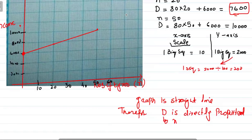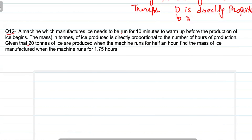Question 12: A machine manufacturer — ice needs to run for 10 minutes to warm up before production. The mass of ice is directly proportional to the number of hours of production. Given that 20 tons of ice are produced when the machine runs for half an hour, find the mass when the machine runs for 1.75 hours. First, we write the important data: 10 minutes warm-up time before production.